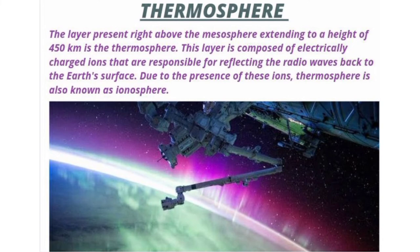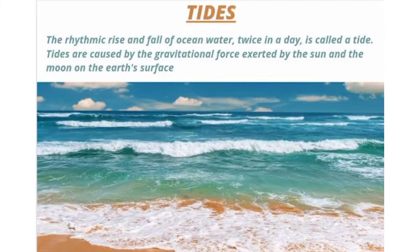Tides. The rhythmic rise and fall of ocean water twice in a day is called a tide. Tides are caused by the gravitational force exerted by the sun and the moon on the earth's surface.